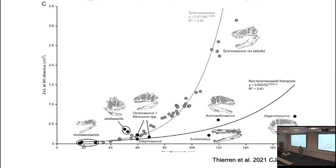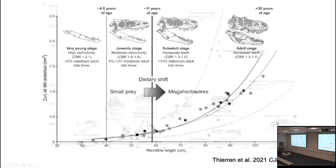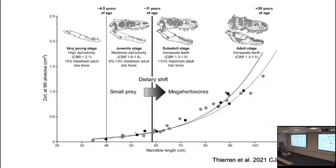Looking at part of the tree, these are the bending forces of the lower jaw as an estimate of mechanical strength. At small body size, tyrannosaurs — in the grayish circles — are comparable to some other theropods, but after they reach a certain body size, tyrannosaurs rocket up in terms of mechanical strength compared to other giant carnivores. This is consistent with the idea that they changed their diet from small-bodied animals to giant animals at a certain life stage.